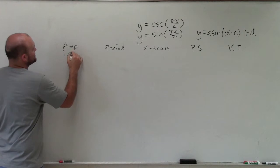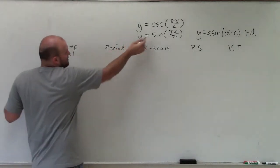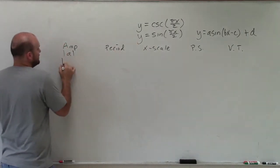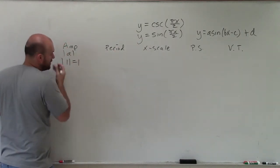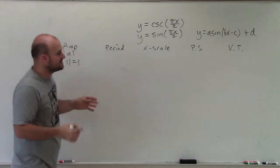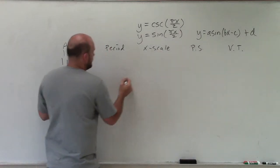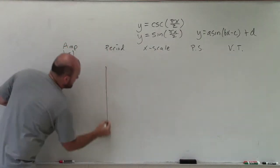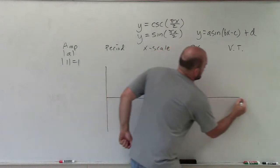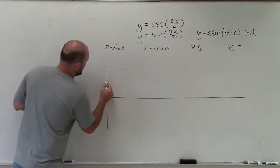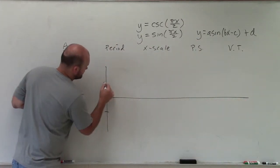The amplitude is the absolute value of a. In this case, we don't have a number in front, so it's the absolute value of 1, which is just 1. That means my graph is going to go up 1 and down 1. So my amplitude is up 1, down 1.